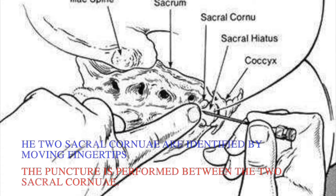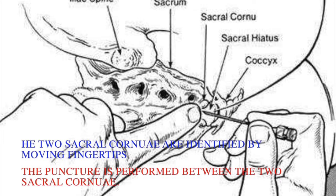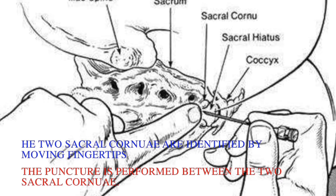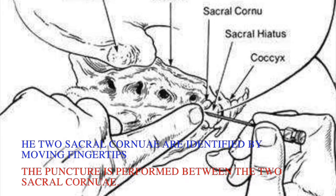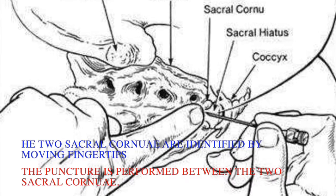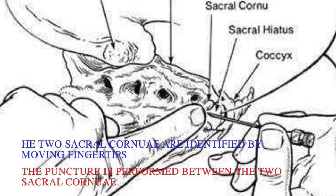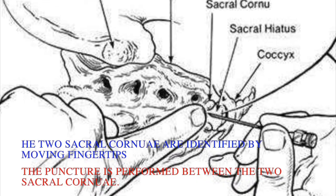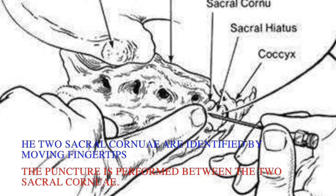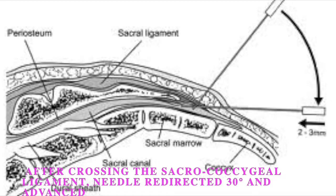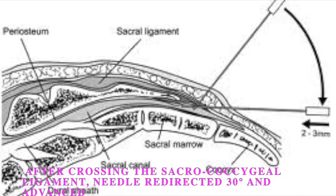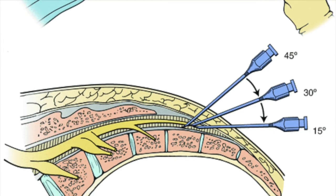Caudal block is an important part of pediatric anesthesia. In this video we'll see how to perform a caudal anesthesia. Two sacral cornua are identified by moving the fingertips and the puncture is performed between the two cornua. After crossing the sacrococcygeal ligament, the needle is redirected 30 degrees and advanced.